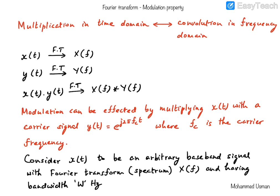To perform modulation, what we do is we multiply a signal X(t) with another signal called the carrier signal, which has a certain high frequency F_c. So the second signal Y(t) with which we are going to multiply is our carrier signal. We will begin our discussion by considering the carrier signal to be a complex exponential signal e^(j2πF_c·t), where F_c is the carrier frequency.